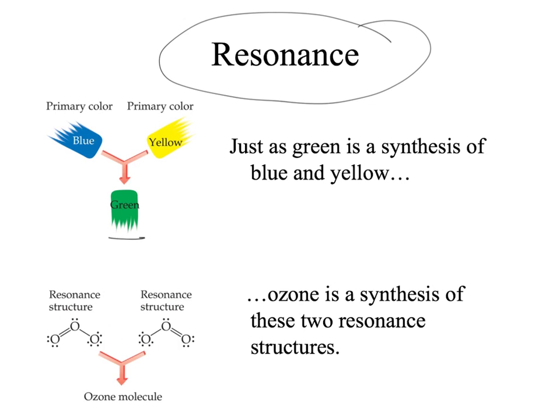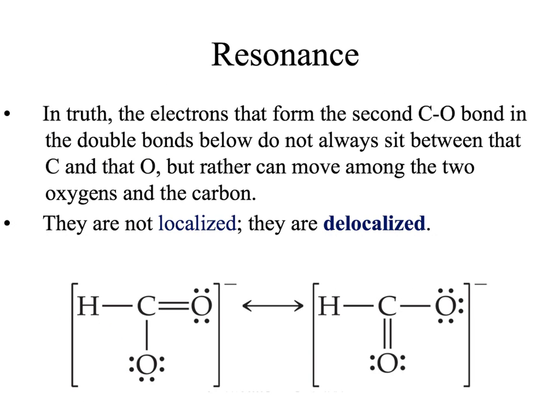The electrons in the second bond — looking at a different example, the formate ion HCO2- — we say they are delocalized. They're not sitting in one fixed place; they kind of move around and are in both places at once.